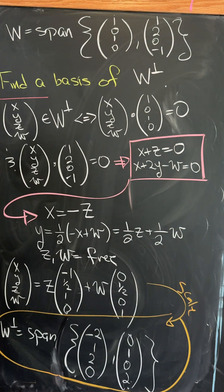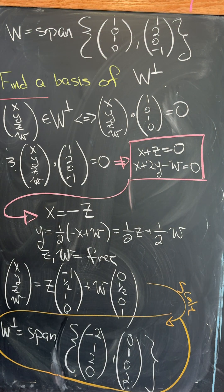Let's look at a nice linear algebra homework problem. We've got a vector space W, which is the span of vectors (1, 0, 1, 0) and (1, 2, 0, -1). This is a subspace of R4.